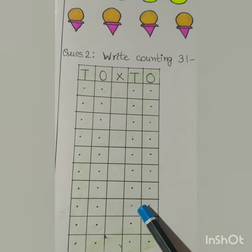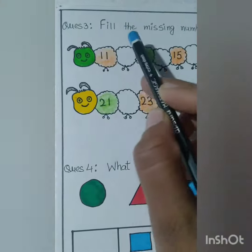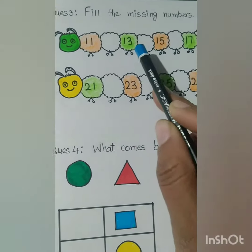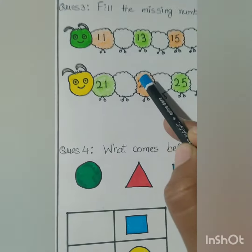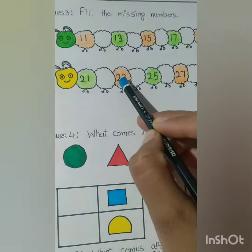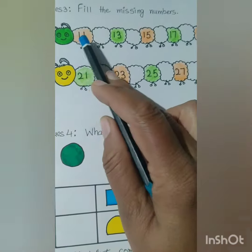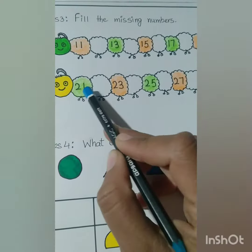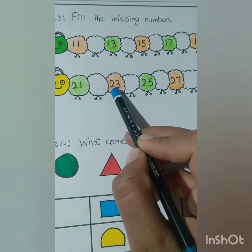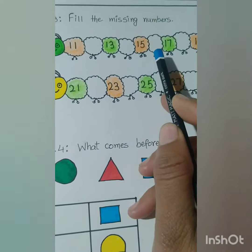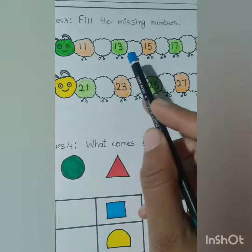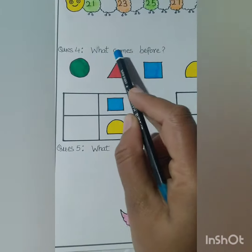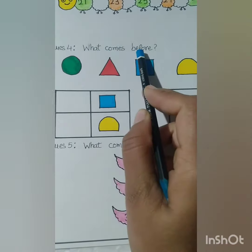Question number three: fill the missing numbers. Children, there are two caterpillars, and on the caterpillars' tummies some numbers are given and some numbers are missing. So the numbers that are missing, you will write those numbers.